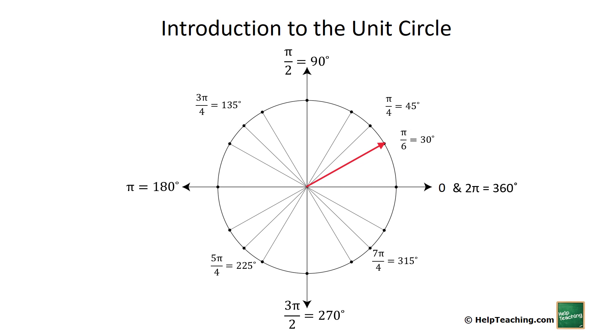So this becomes pi over six, two pi over six, three pi over six, four pi over six, five pi over six, six pi over six.